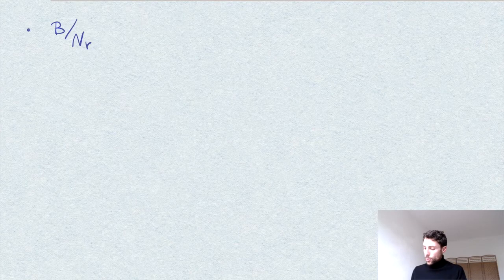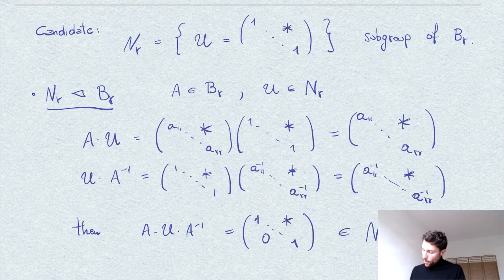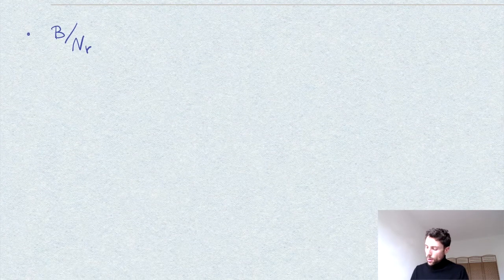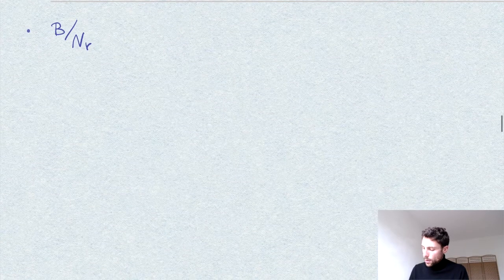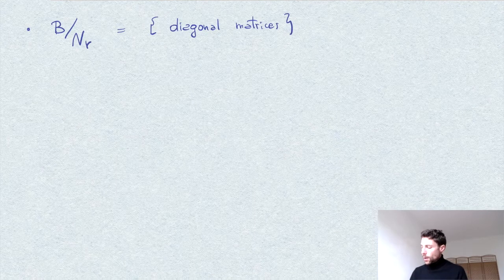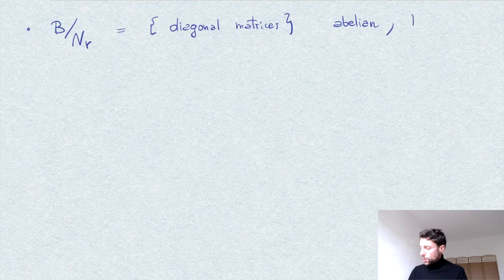Next, we look at the quotient. An element in the quotient B(R)/N(R) — quotienting by the action of N(R) — allows us to send all elements above the diagonal to zero, and what we are left with are matrices with elements only on the diagonal. So the quotient is the set of diagonal matrices. In particular, it is an abelian group, and therefore trivially solvable.